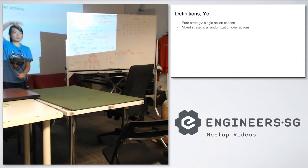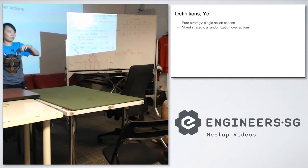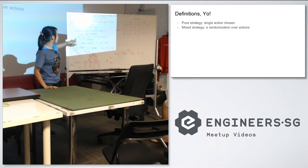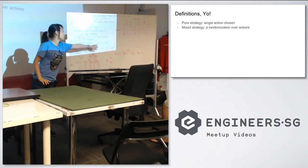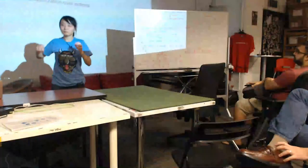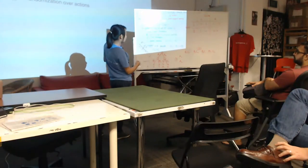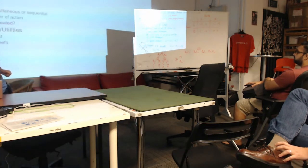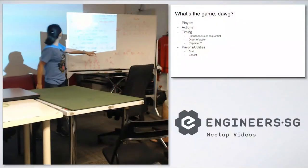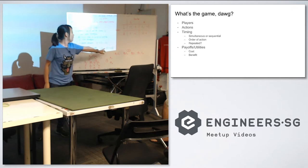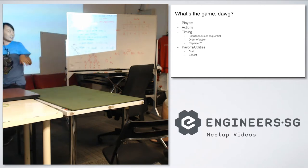Big A is the set of actions for player one, player two, and so on — you pick one action from each set. A generic element is represented as lowercase a, made of one action from each player. The last definition here is payoffs and utilities, sometimes called utilities, which is a function from the set of actions to a value.